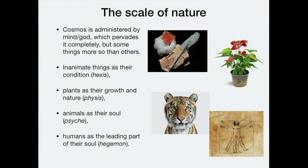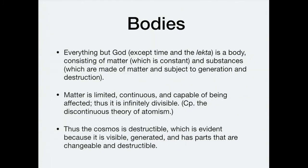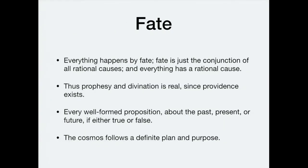Animals show even greater complexity — they also have a nature like plants and a hexis like inanimate things, but they are capable of sensation and moving themselves around in space, which plants aren't able to do, so we say they have a psyche or soul. Humans also have a psyche as animals do — we are animals in a sense, and of course we have a nature like plants and a hexis like inanimate objects — but we also have a rational, leading, controlling part of the mind able to use language, which they call the hegemon.